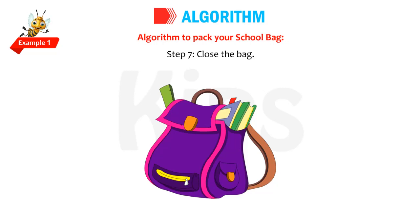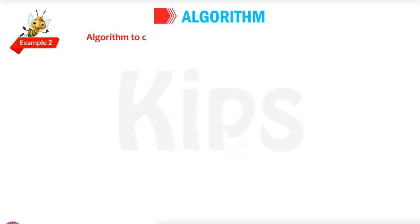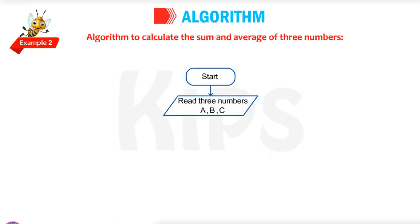Now we will go to the next mathematical problem — algorithm to calculate the sum and average of three numbers. There would be two outputs. In the previous examples there was only one output each. Here there are two outputs: calculate the sum and find the average. So two outputs should come.